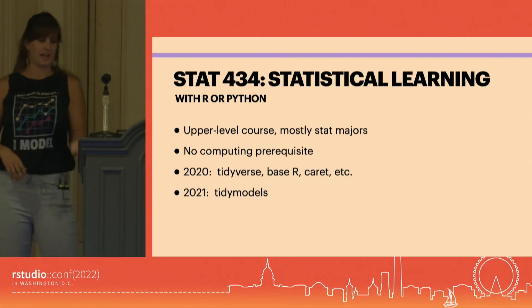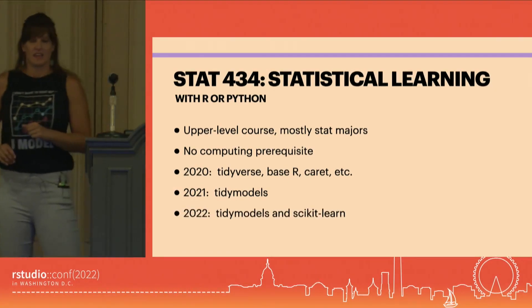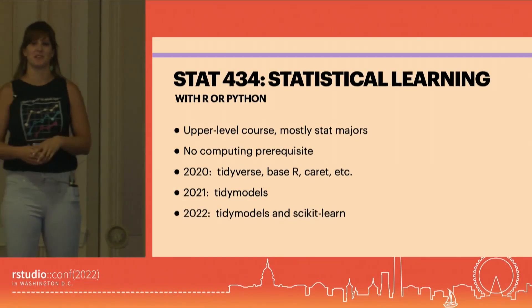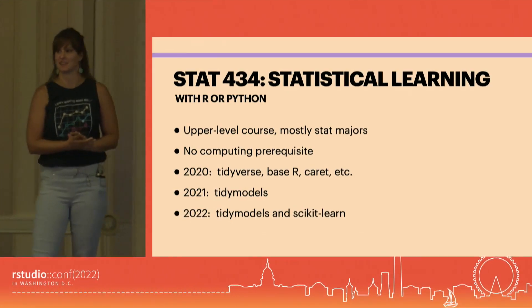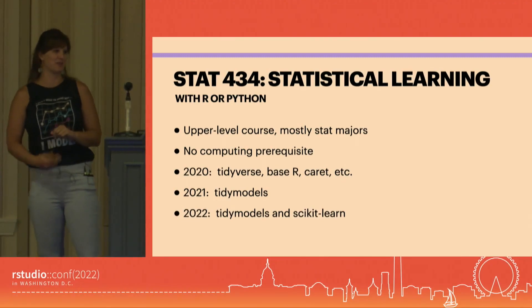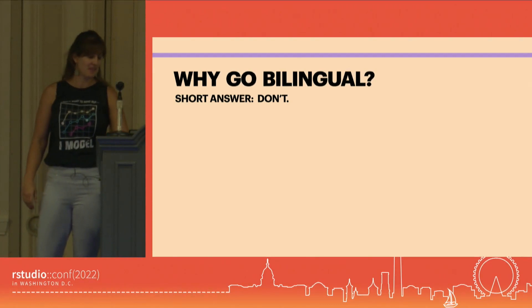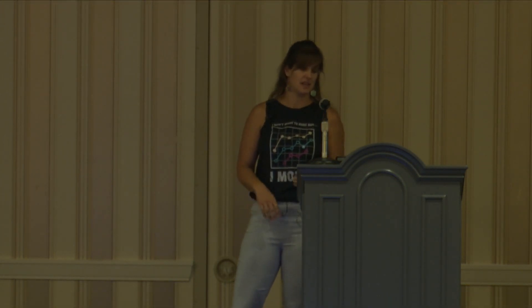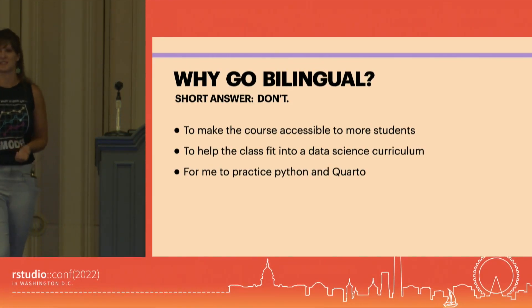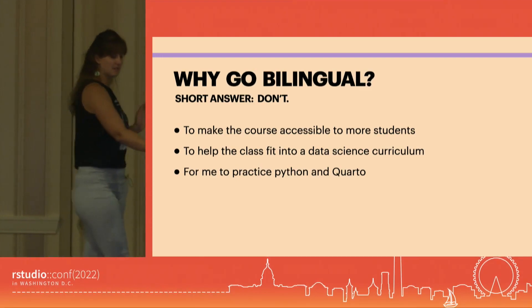When I took it over, I changed it to tidymodels, and that was really fun. Tidymodels is kind of new and it made it so much easier to teach. And then this year, instead of doing the smart thing and just reusing my materials with little tweaks, I decided to translate everything also into scikit-learn in Python. I want to tell you what this talk isn't — I am not encouraging you to do this. This was extra work for me without a huge amount of benefit in the class. I did it because there are two funnels into this course, and I wanted it to be accessible. I wanted to practice Python and pick up Quarto, which is nice for using both.